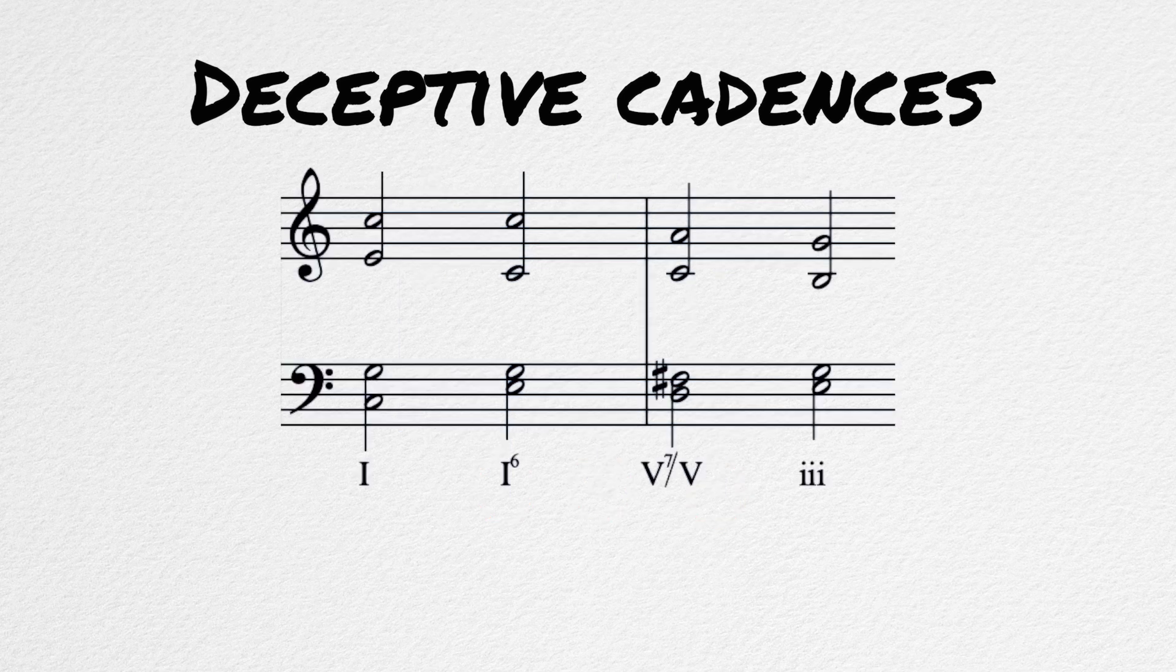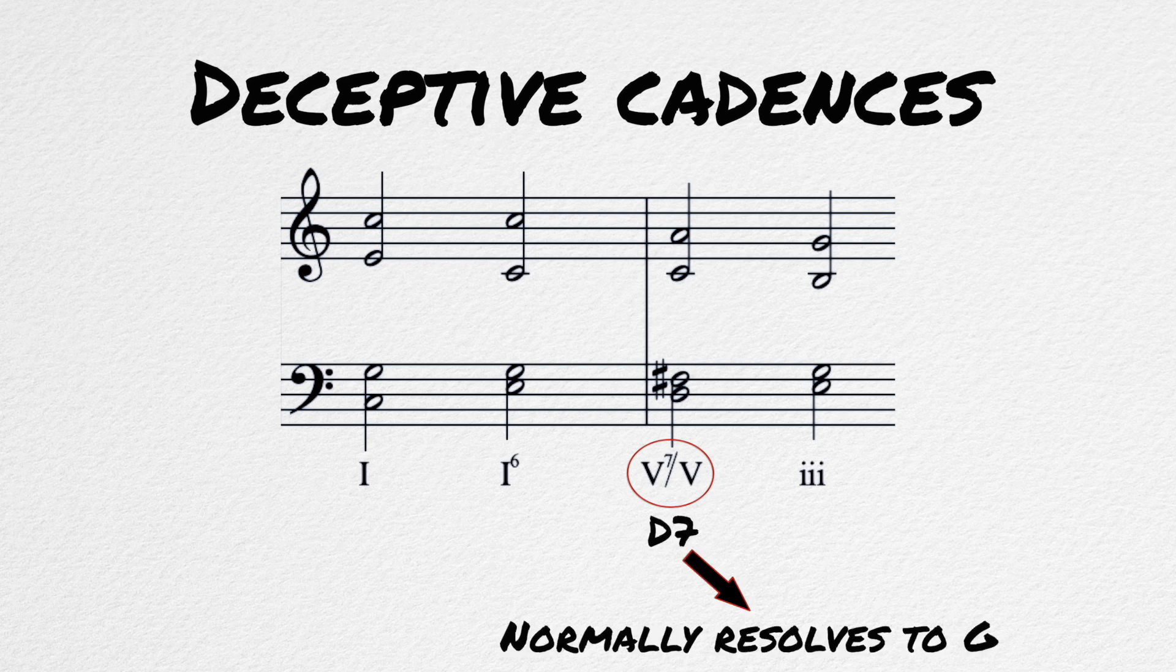This can also be used with a secondary dominant situation. We can set up a V of V in C major, which would be a D7 chord. This D7, instead of resolving to G major, can resolve upwards to E minor, creating a deceptive cadence in the key of G.